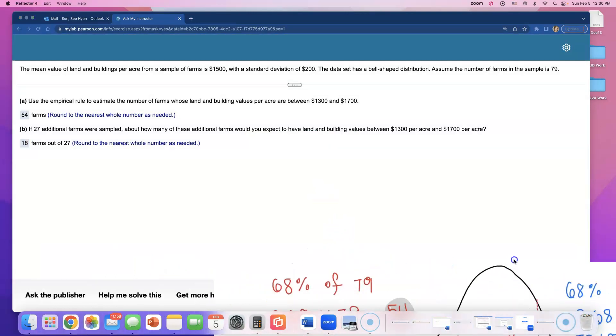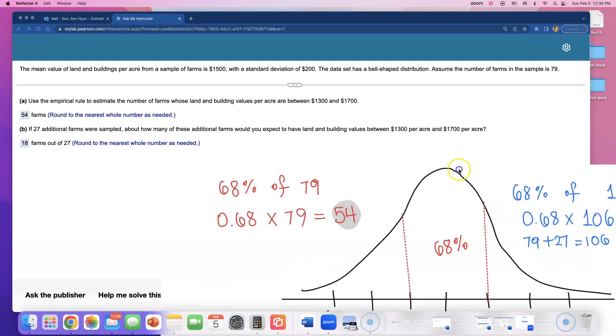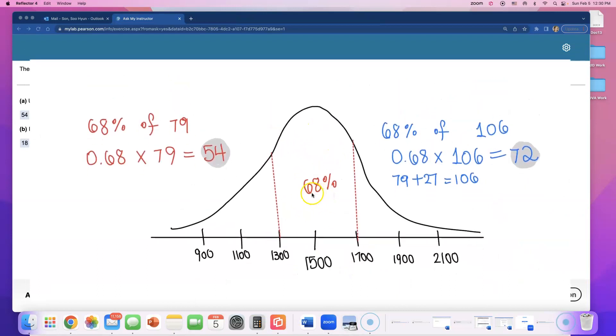I think that's it. Next chapter I'll show you how we can use a thing called normal calculator to find these 68% because right now we just have to memorize that in between one standard deviation there are 68%, and that's what the empirical rule is. We start with 68% for the one standard deviation point.